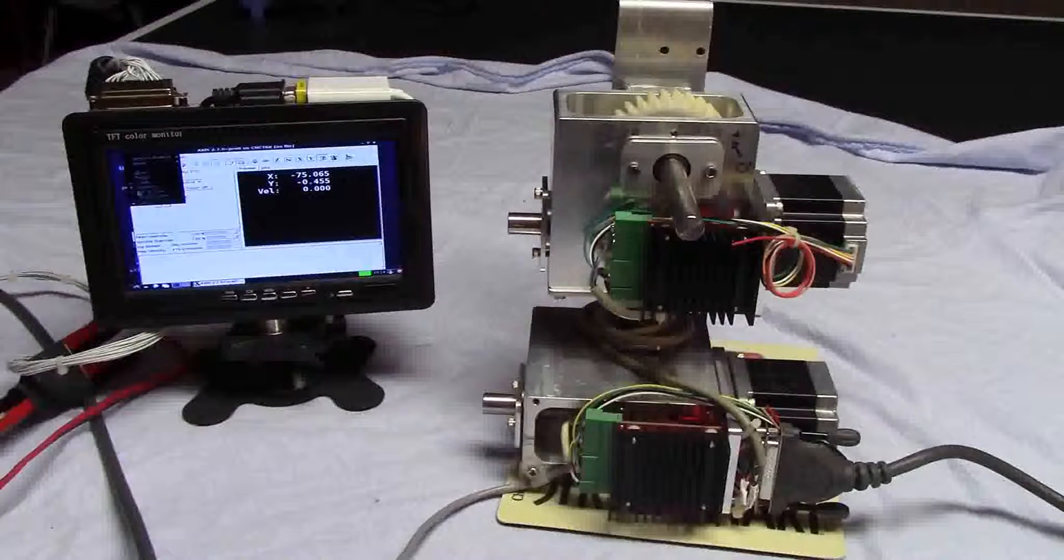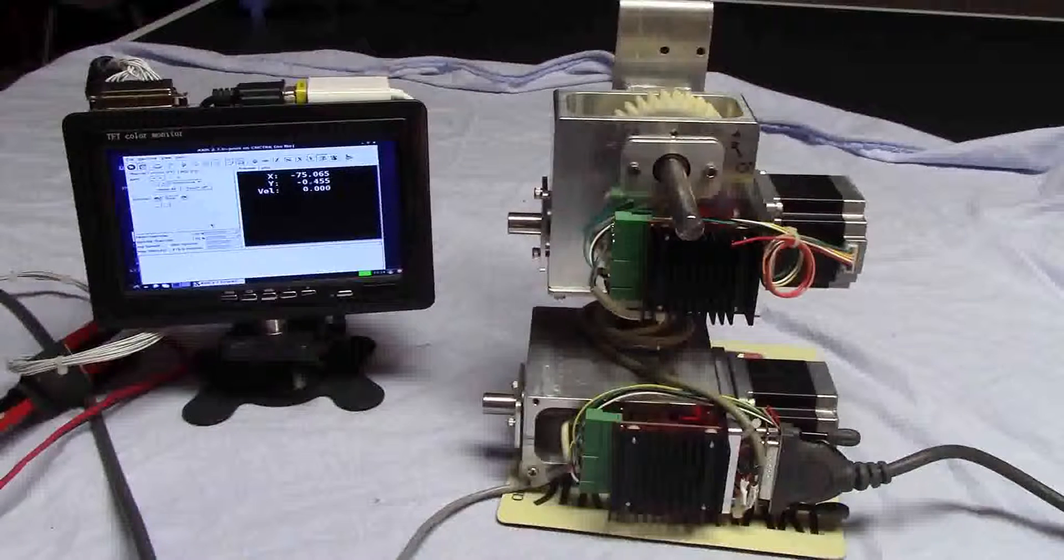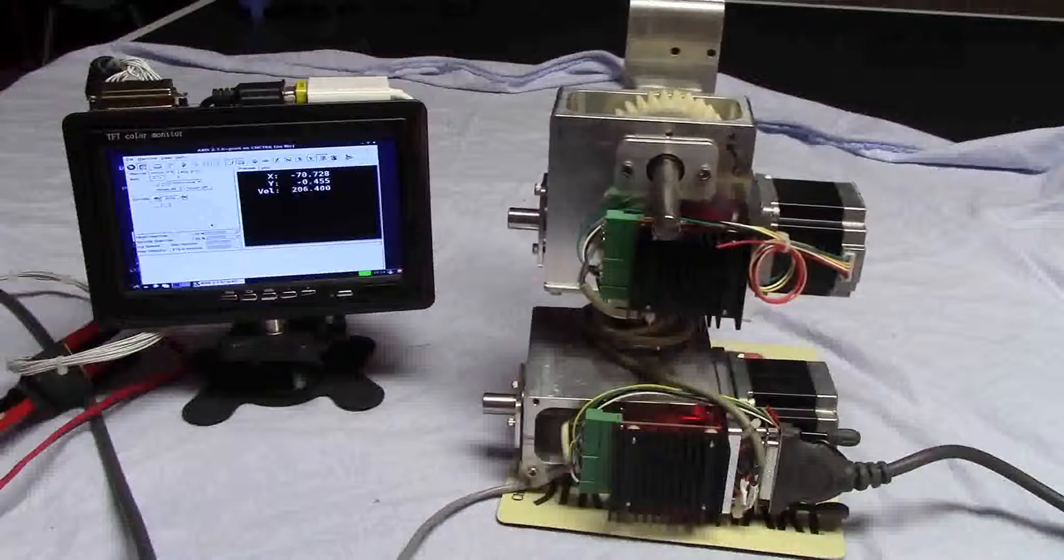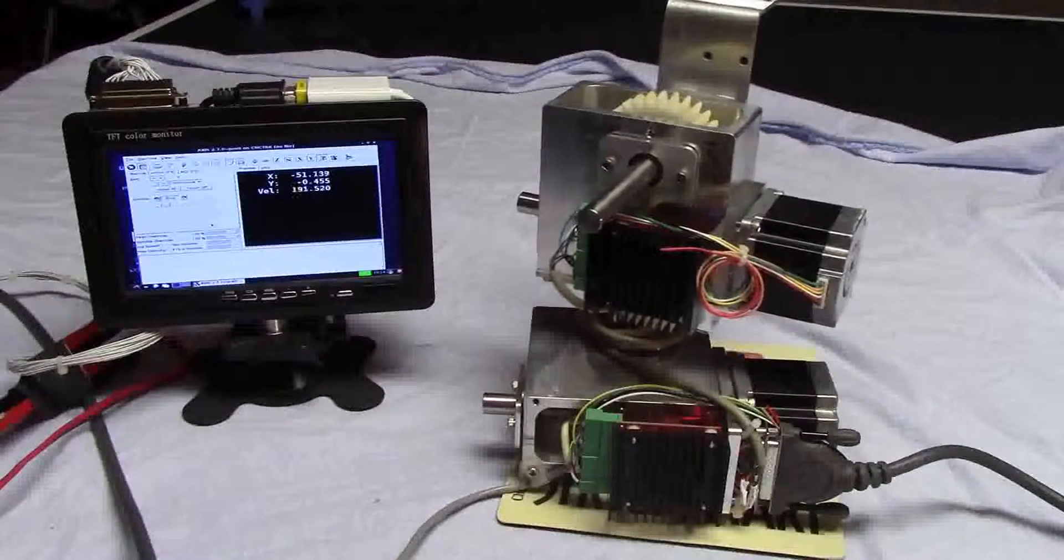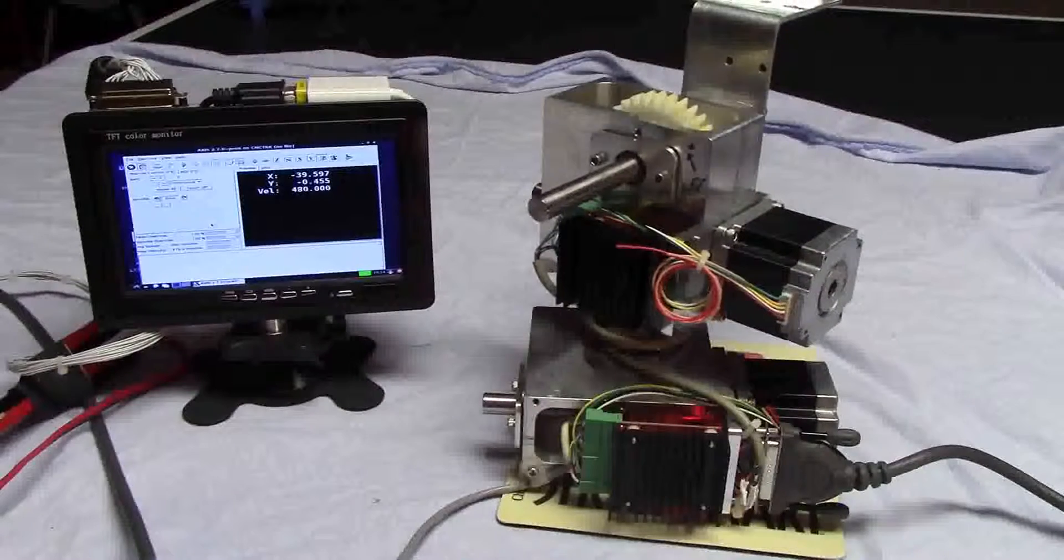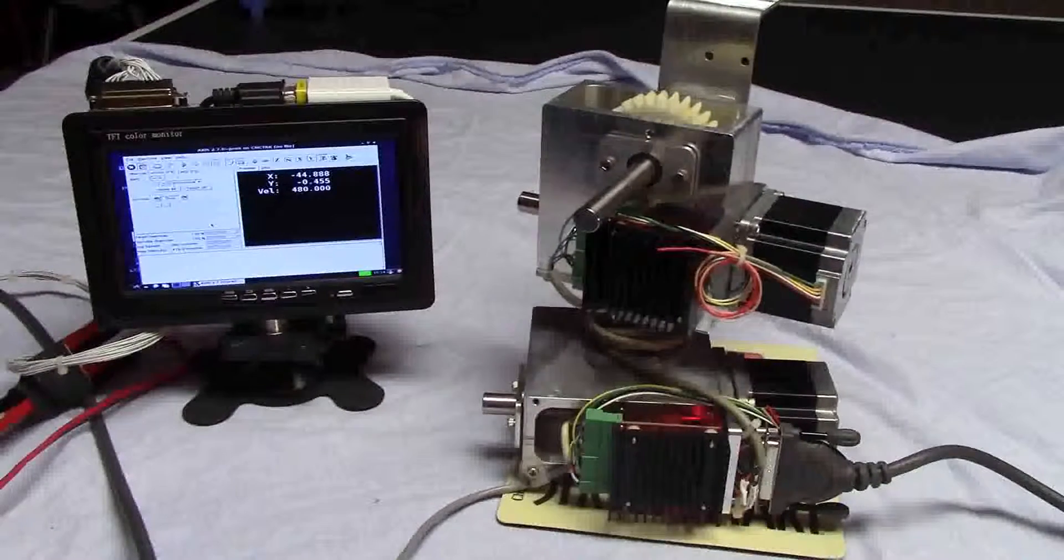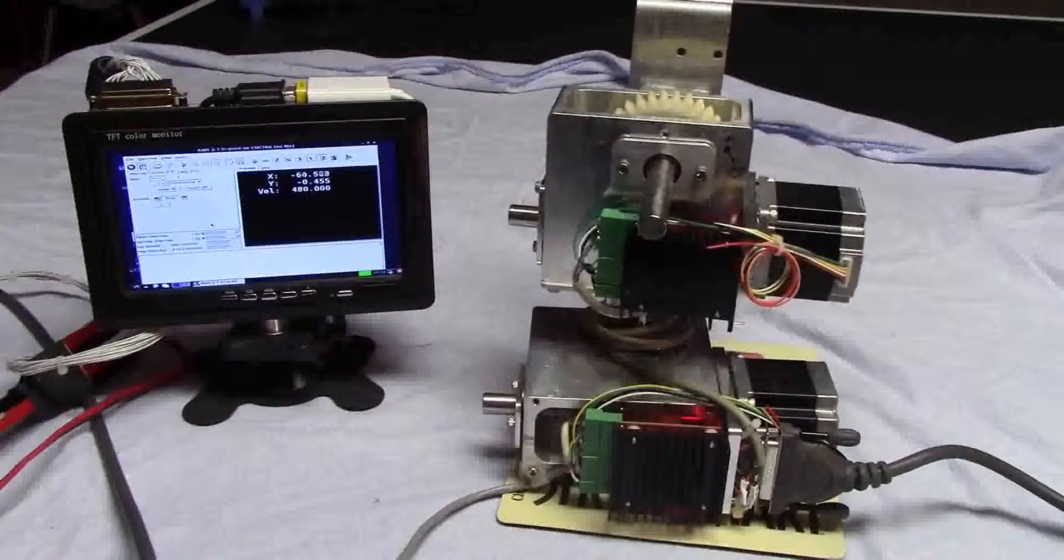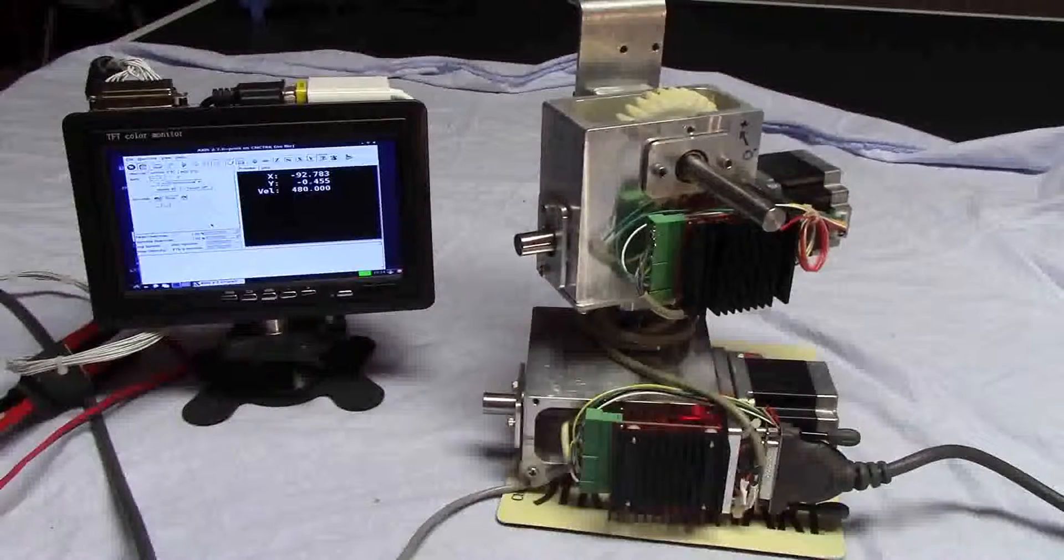So here's the LinuxCNC running and you can see that, should be able to see the numbers on the CNC display changing. And here's azimuth now. It's just rotating the elevation head if you want to call it that, rotating the elevation gearbox in an azimuth direction.